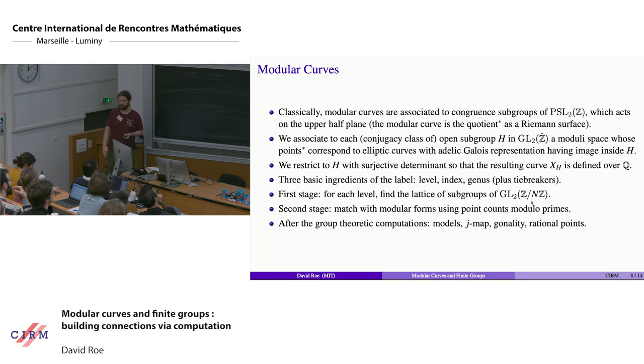The second stage is a lot of the invariants that you might want to compute associated to a modular curve come with matching that modular curve with modular forms. So for each of those curves that you found, you try to find the Jacobian as an abelian variety given by its decomposition into modular forms. The main tool is that group theoretically you can count points and that lets you try to match up the L functions. We've succeeded in doing that for many of these curves.